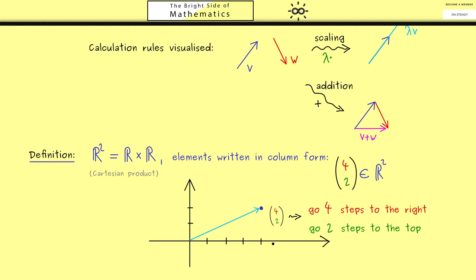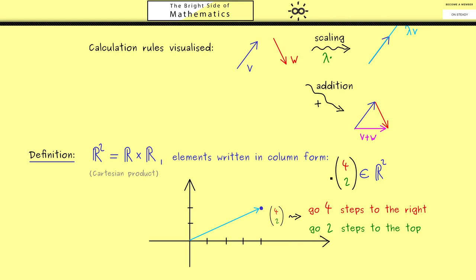In fact, this is exactly the idea we carry over to the definition of scaling and addition. More concretely, for scaling this means we just multiply both numbers by lambda, and for the addition it just means we have to add both numbers separately. So you see, this is a natural definition when you have the picture in mind.